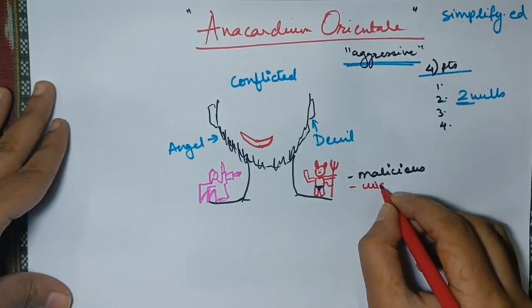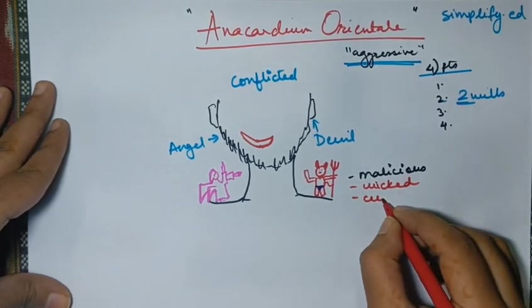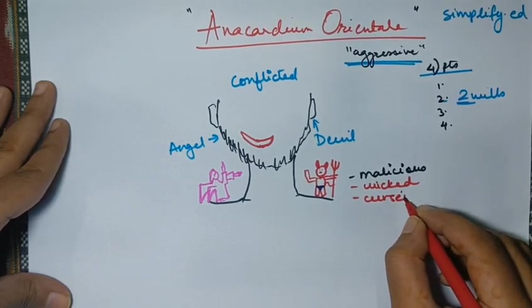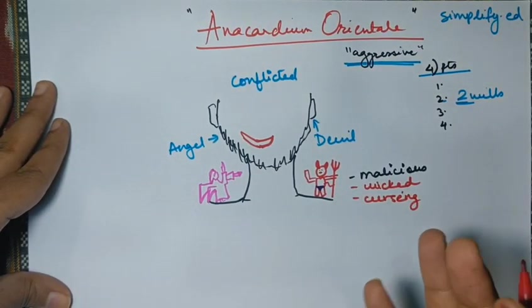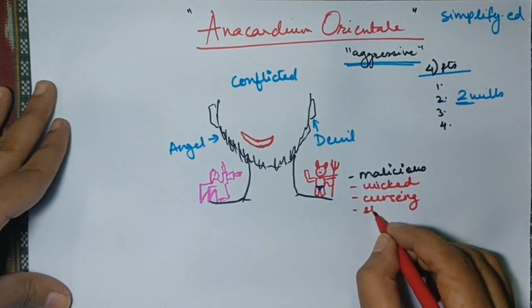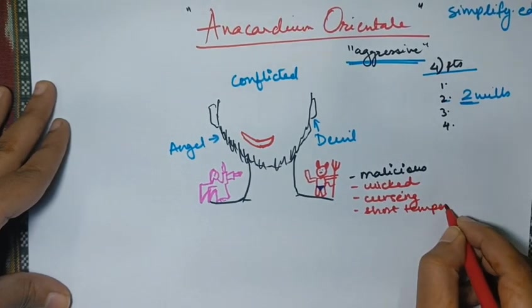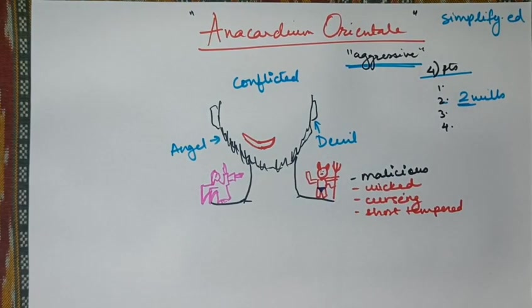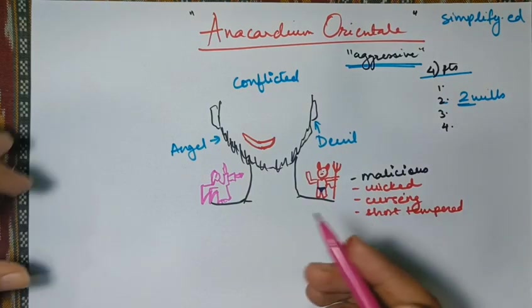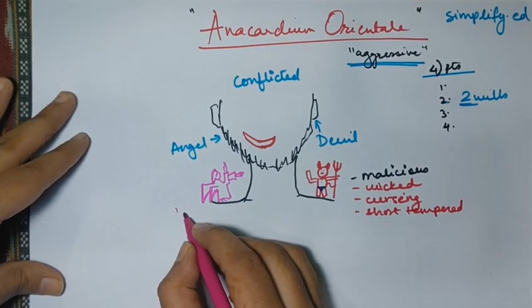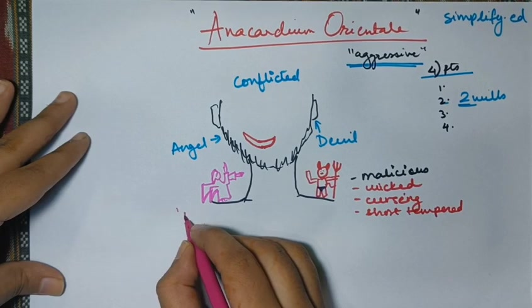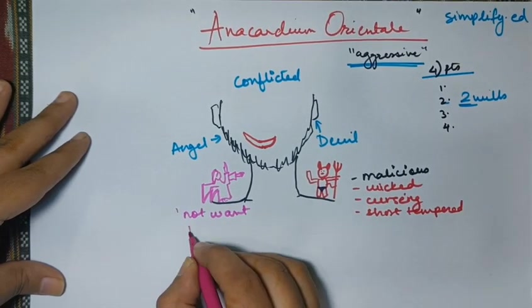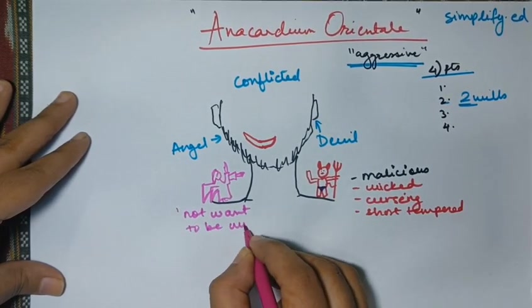You could call them as wicked individuals. They don't mind cursing. So they curse quite often for no reason at all. They are extremely short-tempered. So this man had all of these symptoms and with this symptom we could give any drug like Nuxvomica or Fluoric Acid as well. But with that, he also had a conflicted state where he used to think that what I am doing might not be the right thing and he would not want to be wicked but he was.